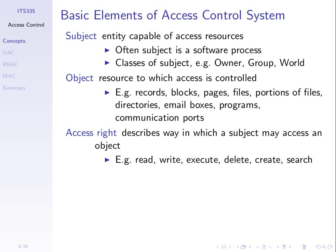An access right describes how a subject can access an object. Examples of rights include: read — you can see the contents of a file; write — you can modify the file; execute — you can run a program; delete objects; create new objects; and search objects. Different systems use different sets of access rights. The common ones are read, write, and execute.